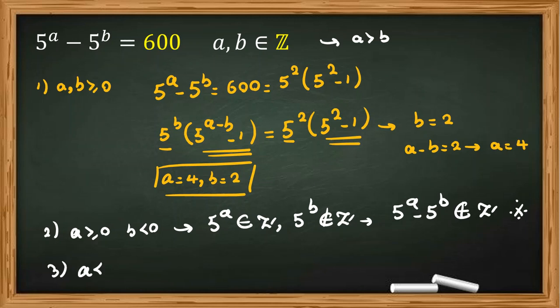Third case, if A negative and B negative, then 5 to the A is less than 1. So 5 to the A minus 5 to the B is also less than 1 because 5 to the B is a positive number. But we know this number is 600, which is again a contradiction. So we've proved our only answer here is A equal to 4, B equal to 2.